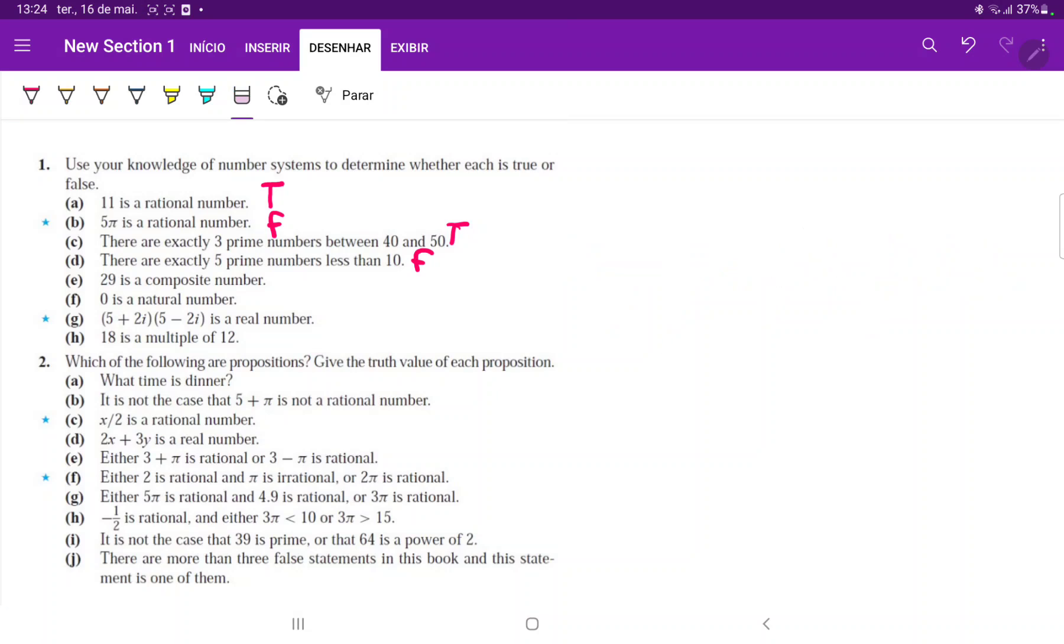29 is a composite number. Well, this is false because it cannot be divided by any other number except 29 and 1. So this is false.